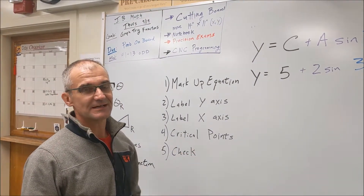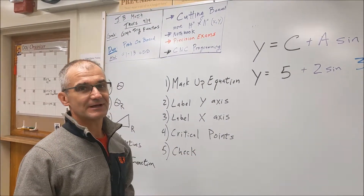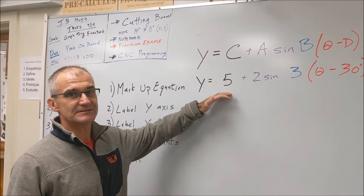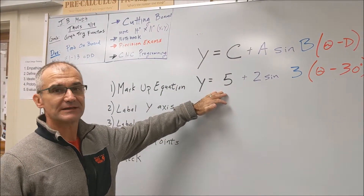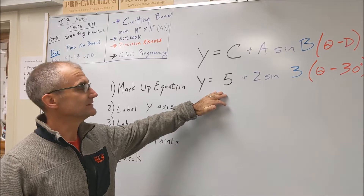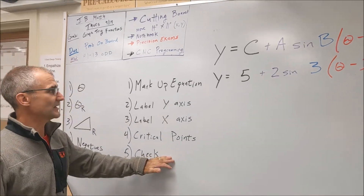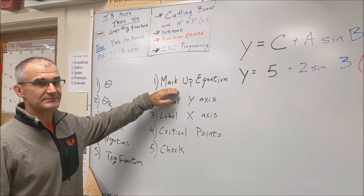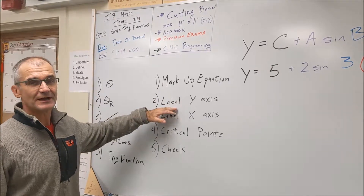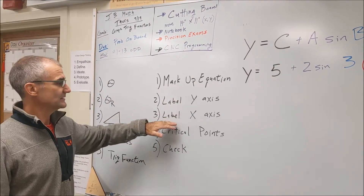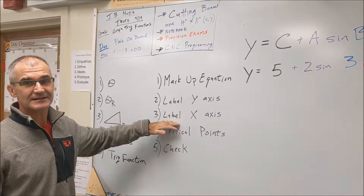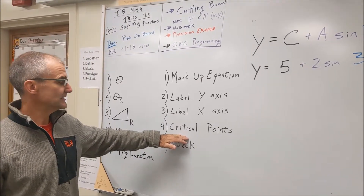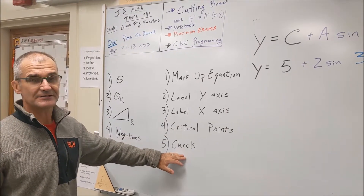I've got a five-step process to guarantee you get it right every time. We're looking at both sine and cosine trig functions. There are five things you need to pay attention to. Step one is mark up the equation. Step two is label the y-axis. Step three, label the x-axis. Step four, put in your critical points of what function it is, and step five, check your work.